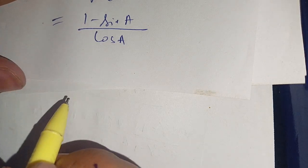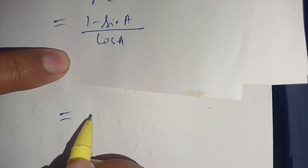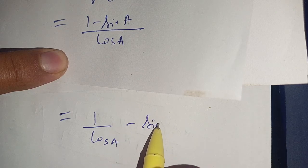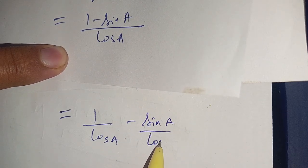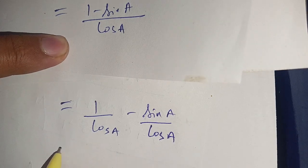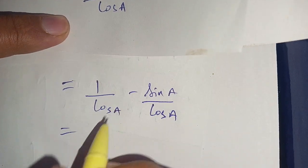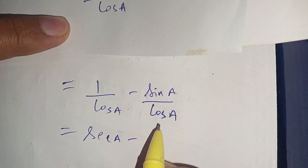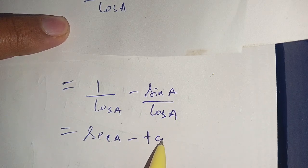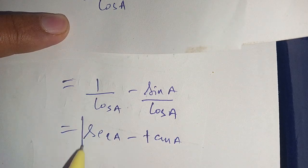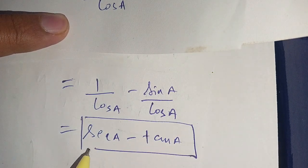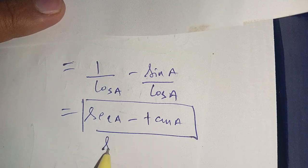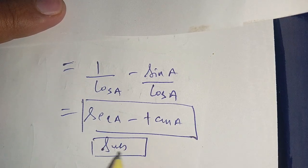In the next step we can write it as 1 divided by cos of a, minus sine of a divided by cos of a. We know that 1 over cos a equals sec a, and sine a over cos a equals tan a. Thus our result is equal to sec of a minus tan of a. If you are new here, make sure to subscribe to our channel for more informative videos.